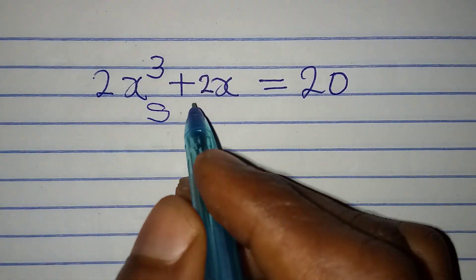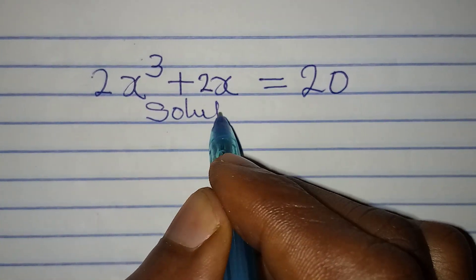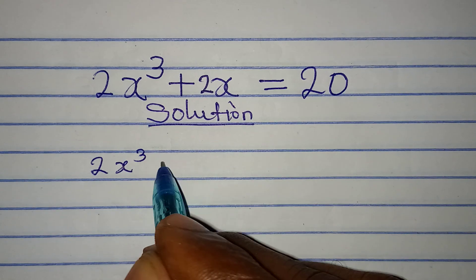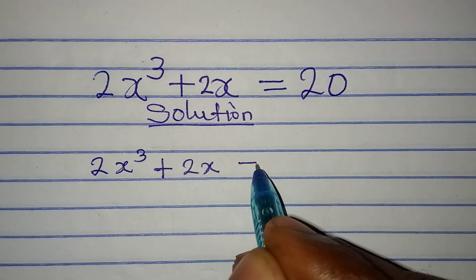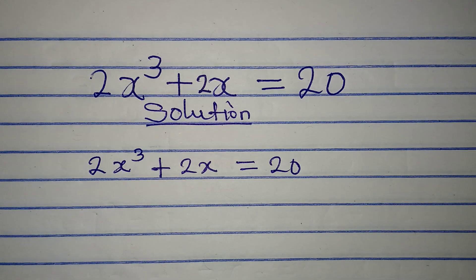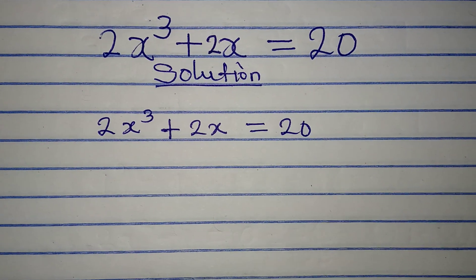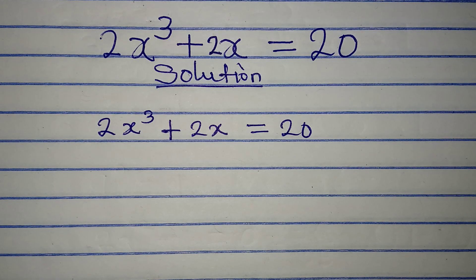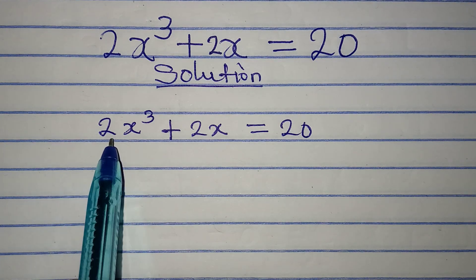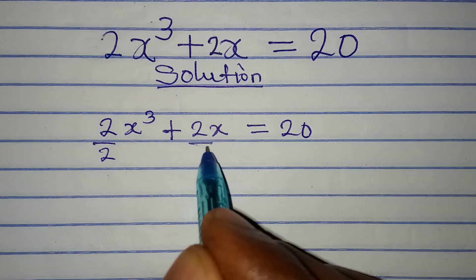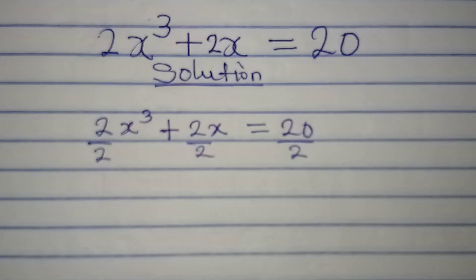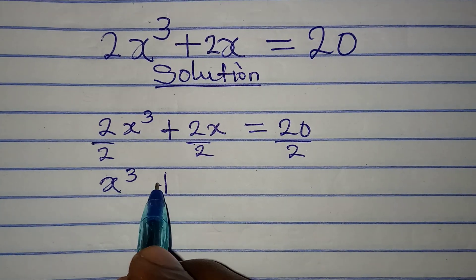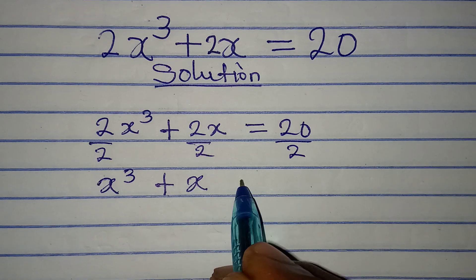Let's solve this problem quickly. We have 2x³ + 2x = 20. By looking at each of these terms, you realize that something is common to all of them, and that is 2. So we can divide everything by 2 so that we'll have a simpler equation. From here we'll have x³ plus x.